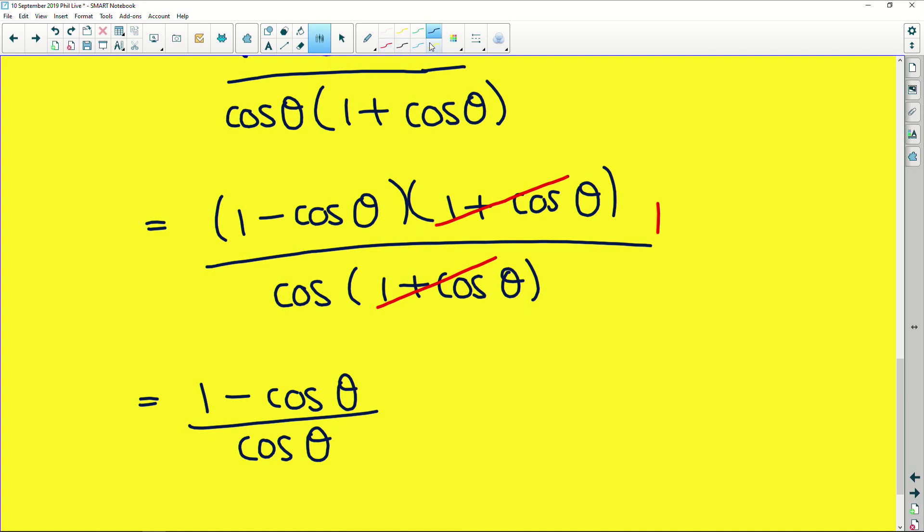Now, remember, our right-hand side is supposed to look like 1/cos(θ) - 1. So we're getting there. We are getting there. Now, another thing, your fundamental understanding of fractions, remember, in what would even be primary school. If you have (x + y)/3, it's exactly the same as saying x/3 + y/3, common denominator.